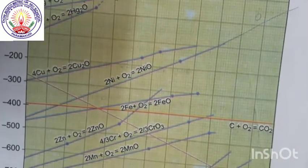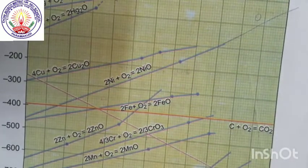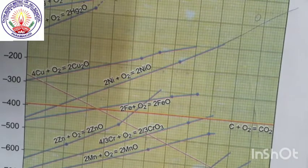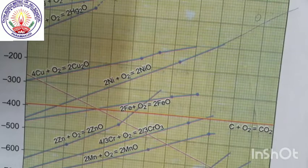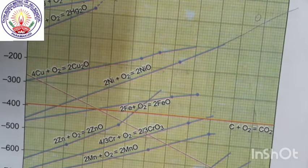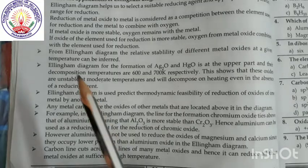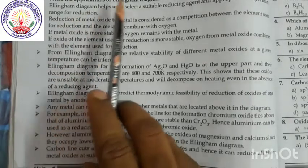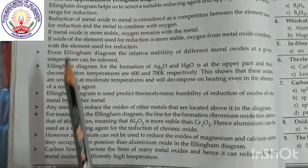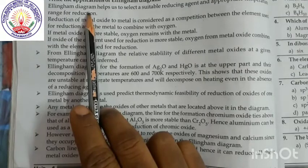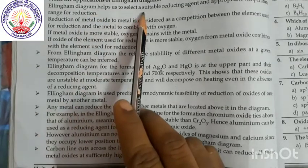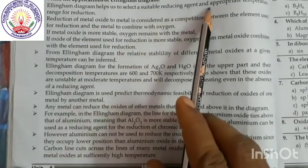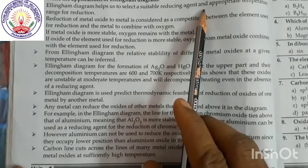So, this Ellingham's diagram helps us to choose which reducing agent can be used for a given metal oxide to reduce it into metal. Now we shall see the applications of Ellingham's diagram. First, it helps us to select a suitable reducing agent at an appropriate temperature.